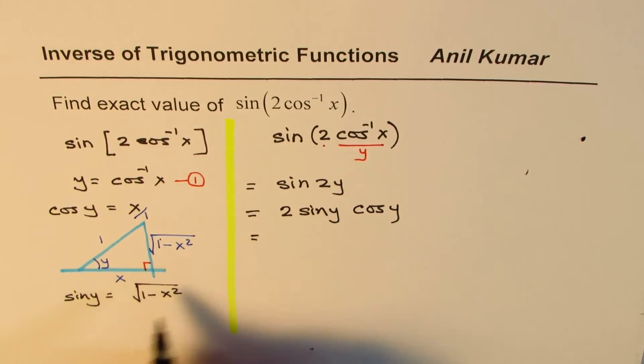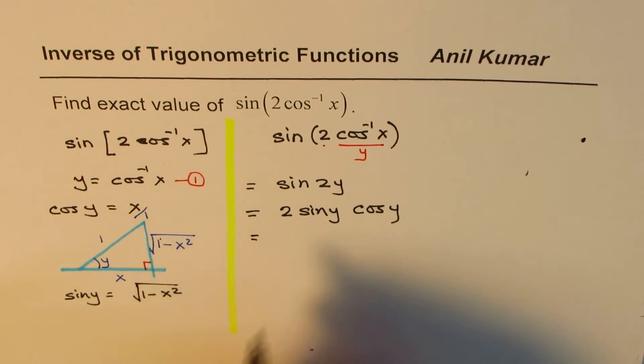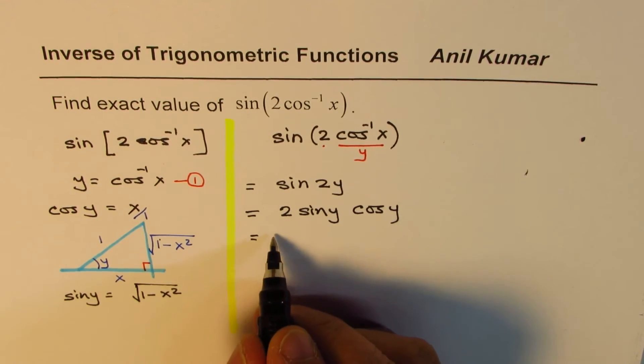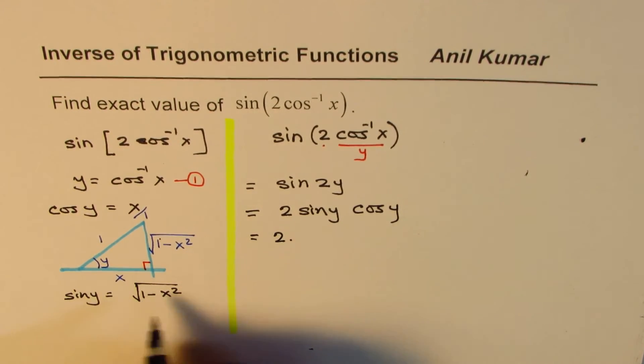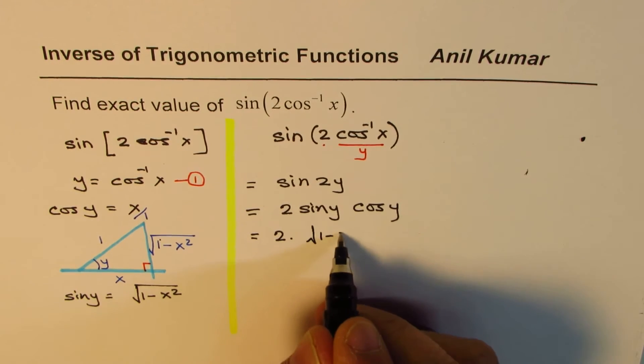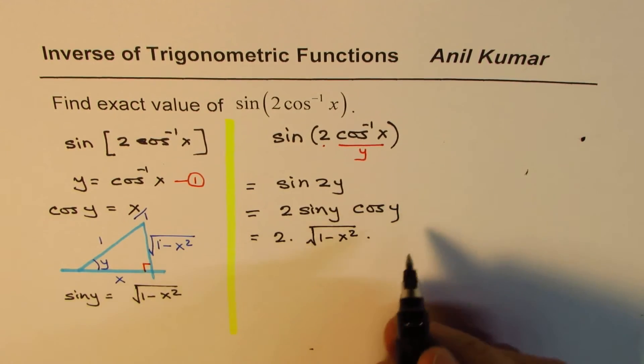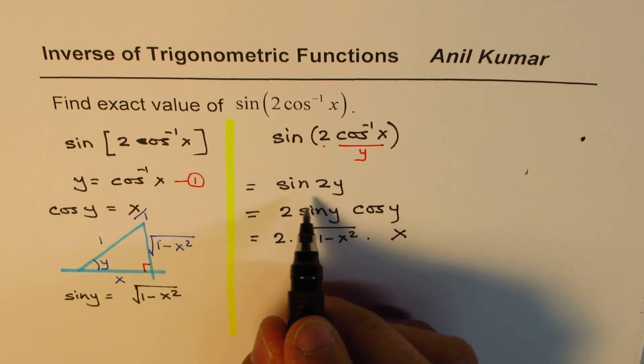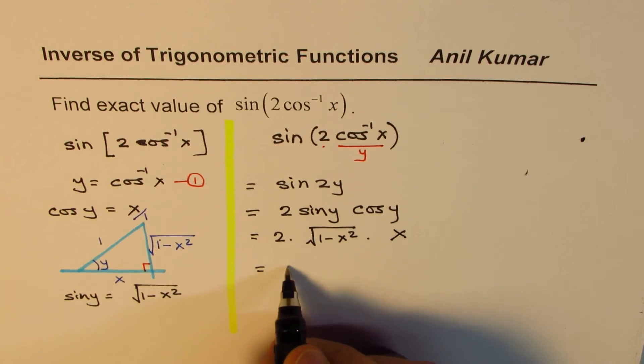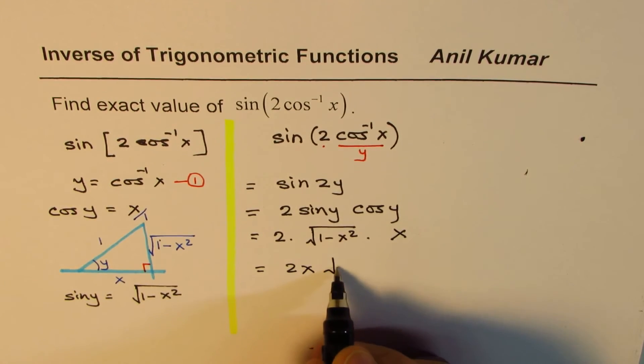We know what sin y is, and we know what cos y is in terms of x. So we'll write that down. Sin y = √(1 - x²), and cos y = x. Therefore, sin 2y = 2x√(1 - x²).